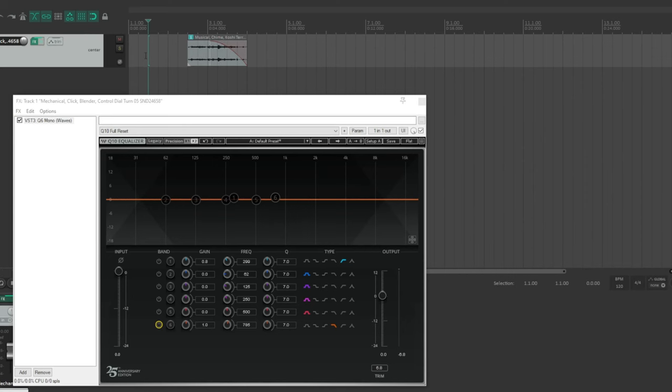To better explain low and high pass, let's say I have this sound. If I apply a low pass filter, meaning only the lower frequencies are allowed to pass through and allow our ears to hear them, it sounds like this. If I reverse it and add a high pass filter, meaning only the high frequencies are allowed to pass through, it sounds like this.